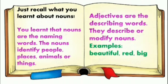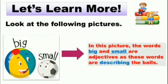So these examples show that adjectives are the words which describe the nouns, telling you something more about them. Now, look at the following pictures. Can you see a beautiful picture with two cute little balls? One ball is big and colorful, and one ball is small and black and white. In this picture, the words 'big' and 'small' are adjectives because they are describing the balls, telling us about the size of the balls.